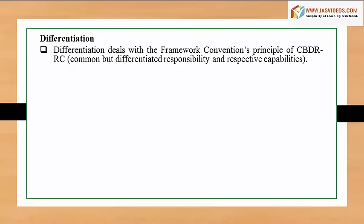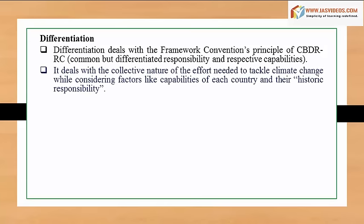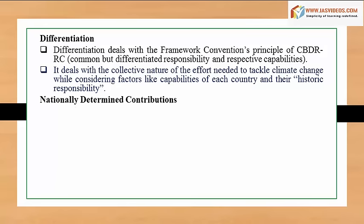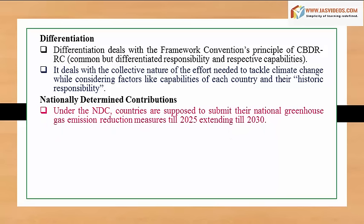Differentiation deals with the framework convention's principle of CBDR-RC — Common But Differentiated Responsibilities and Respective Capabilities. It addresses the collective nature of the effort needed to tackle climate change while considering factors like each country's capabilities and their historic responsibility. Under Nationally Determined Contributions (NDCs), countries are required to submit their national greenhouse gas emission reduction measures.